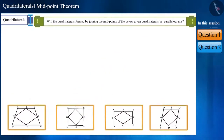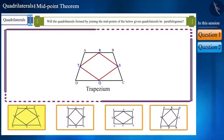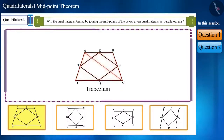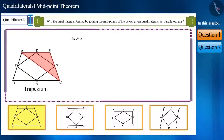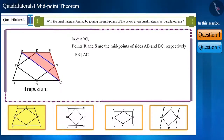Let's find out. Look at this trapezium ABCD. Will the quadrilateral formed by joining the midpoints of its sides be a parallelogram? In quadrilateral ABCD, if we draw diagonal AC, we get two triangles: triangle ABC and triangle ADC. In triangle ABC, points R and S are the midpoints of sides AB and BC respectively. Using the midpoint theorem, line segment RS is parallel to side AC and half its length.